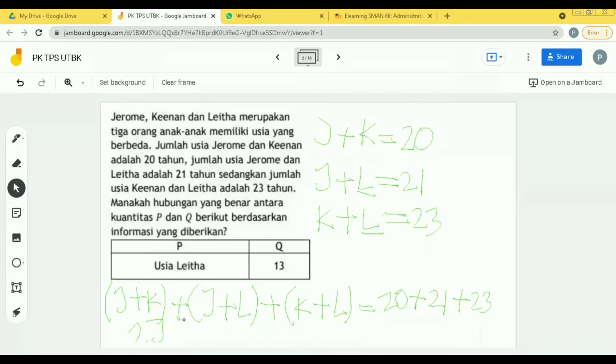Saya pindahin dulu deh ini ke atas. Oke, berikutnya saya tulis di sebelahnya adalah 2K. Karena K-nya ada 2, K di J plus K sama K di sini. Bisa kan? Terus L-nya pun ada 2. Sama dengan, berapa sih di jumlah? 64.